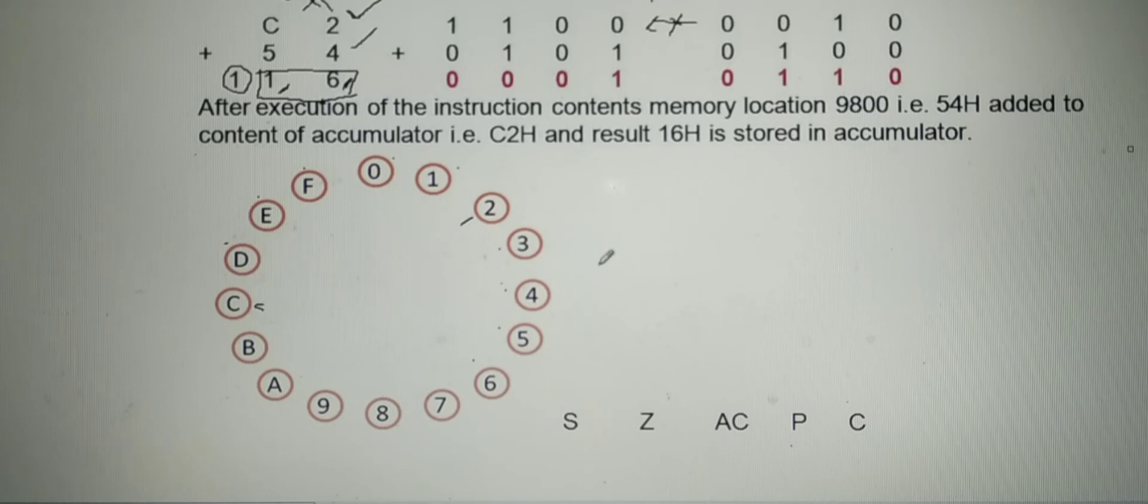Now, let us consider how flags are set and reset in this particular instruction. Here answer is positive, therefore sign flag 0. Answer is not 0, therefore zero flag 0. Here carry is not generated from 4th bit to 5th bit or from 1st nibble to 2nd nibble. Therefore, auxiliary carry flag will reset. That is 0.